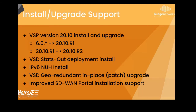With the new release, we also support the stats-out configuration deployment for VSDs — you can deploy VSD in a stats-out configuration. We also support IPv6 configuration for Nuage, so the Nuage can now be provided with IPv6 addresses for the management address, the internal IPs, as well as the external IPs. We also support geo-redundant in-place upgrade. If you have a geo-redundant cluster using 6.0.3, you can upgrade it to 6.0.7 using in-place upgrade, and only the VSD will be upgraded.